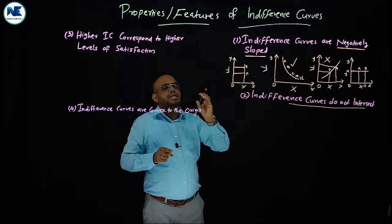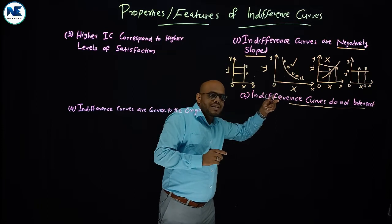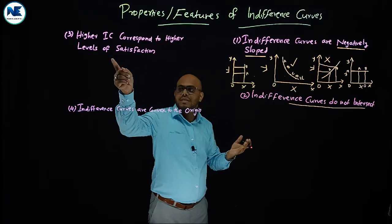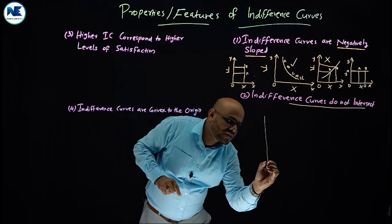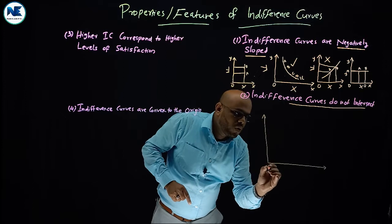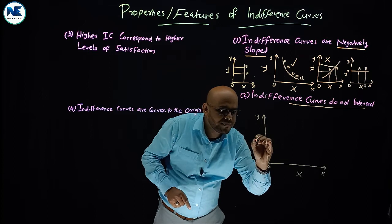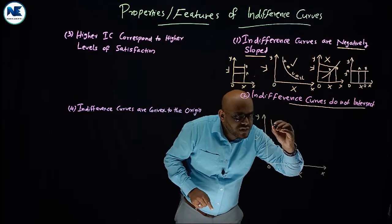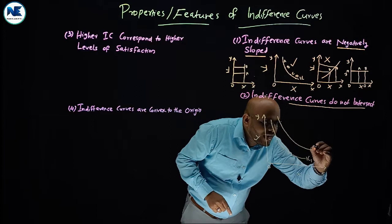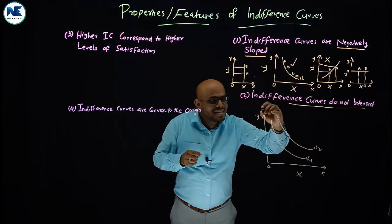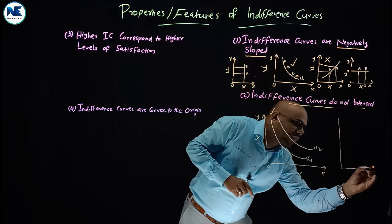The second property is that indifference curves do not intersect. Each indifference curve represents a specific level of satisfaction. A higher indifference curve represents a higher level of satisfaction — that is the third property. We can draw this showing indifference curve IC1 and IC2 on axes with commodity X and commodity Y, which is the correct shape where curves do not intersect.